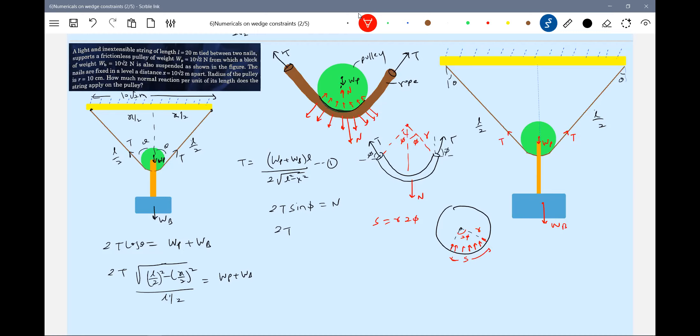What is this total angle subtended? Two phi. Arc length S equals R times two phi. Two T sine phi equals N. So phi will be - I'll replace it this way. Everyone, I hope you're able to follow. This phi can be written as S by two R. What was the question?